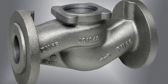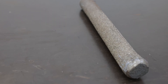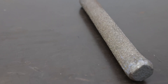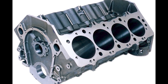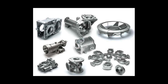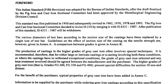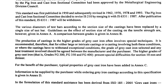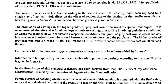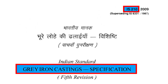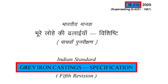Let's dive into something fascinating that's all around us but often gets overlooked — Grey Cast Iron. Ever wonder why car engines, machine parts and even heavy tools work so well? A lot of it has to do with this amazing material. So what is Grey Cast Iron? It's a type of iron widely used in industries for its unique properties, and to make sure it's up to standard, we have something called IS-210, an Indian standard that checks if Grey Cast Iron is right for the job.